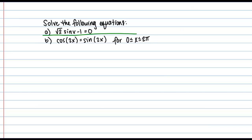Now let's take a look at part B. In part B we're asked to solve the equation cosine of 2x equals sine of 2x for x between 0 and 2 pi. Because we're given a specific interval on x, we're not going to have infinitely many solutions like we did in part A — we'll probably have more than one solution, but not infinitely many. So what I'm being asked to find is essentially where the cosine equals the sine.